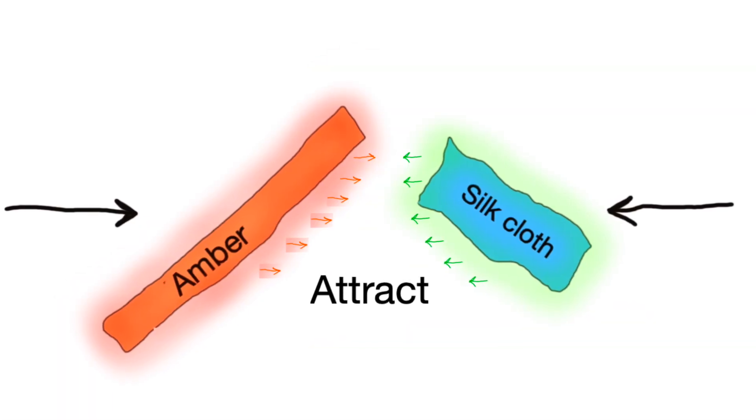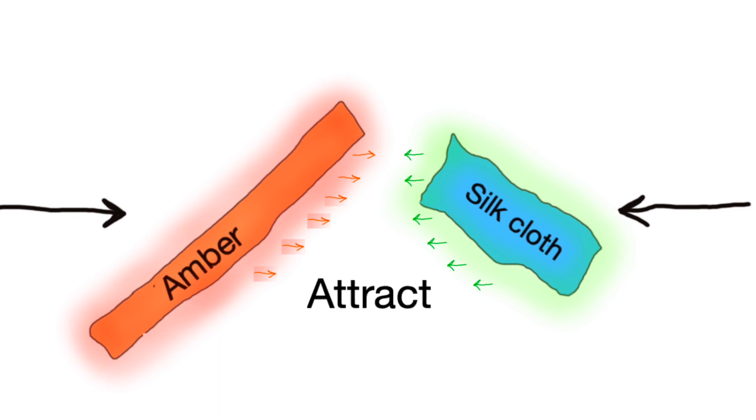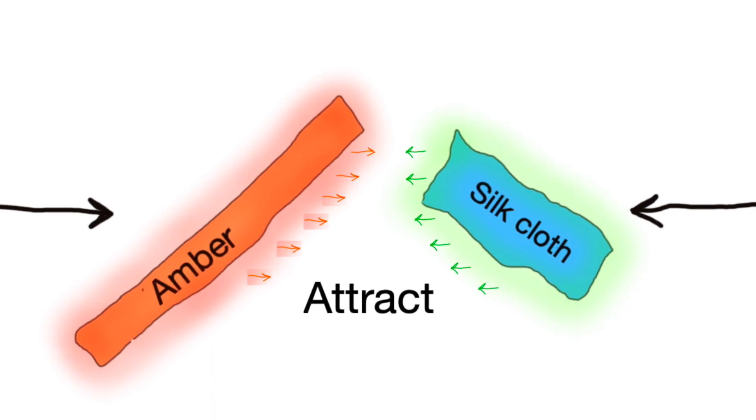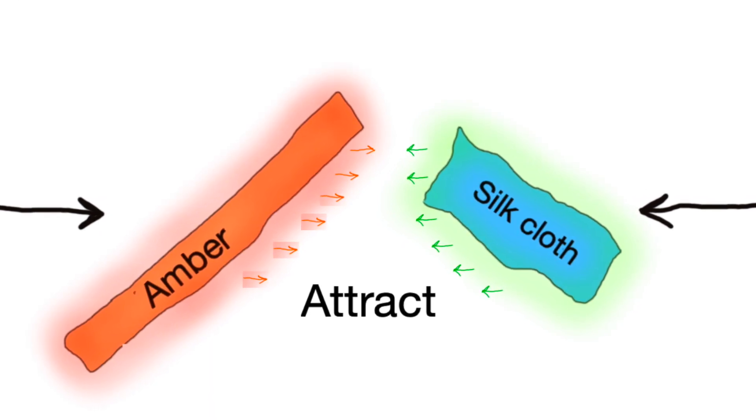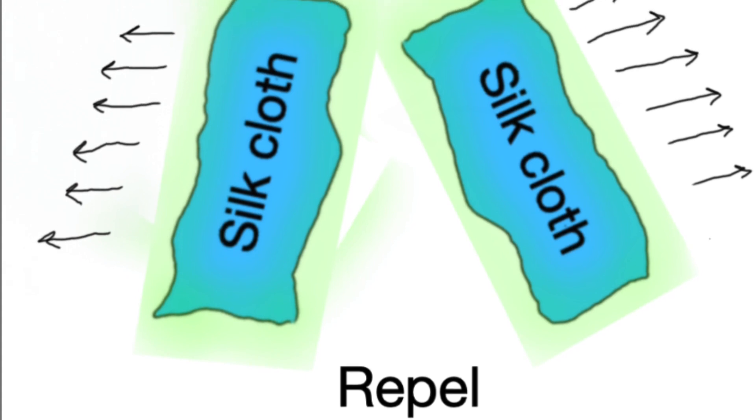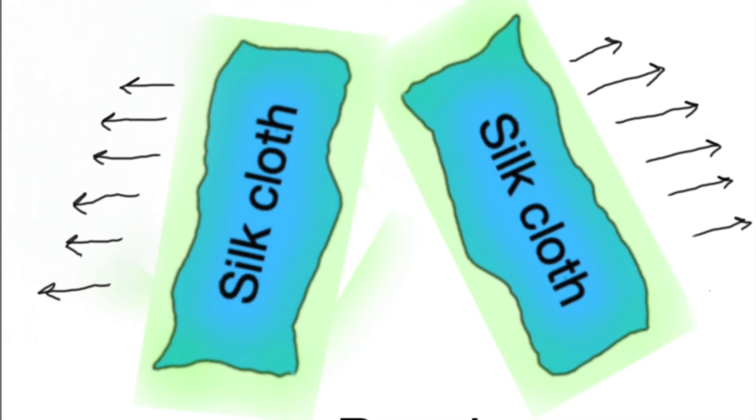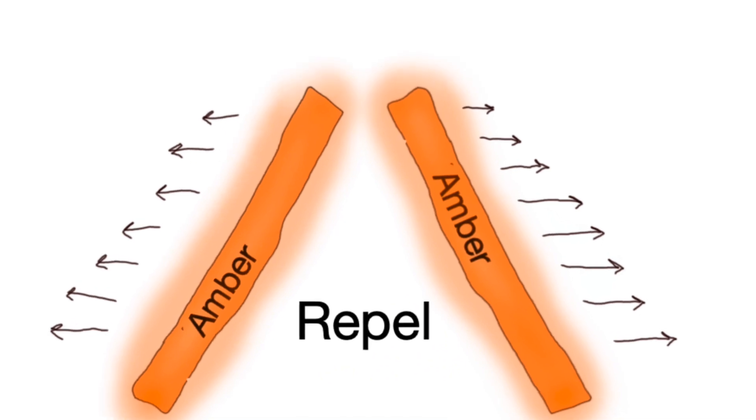The interesting thing is that after rubbing, the amber attracts the silk. On the other hand, a pair of rubbed silk cloths repel each other, and the same thing is observed with a pair of rubbed amber.